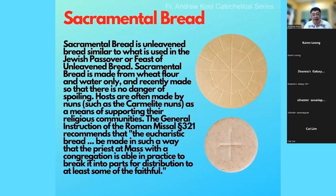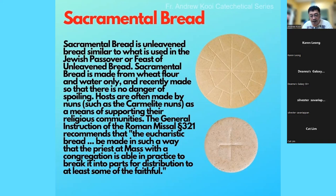Sacramental bread is special bread made for the Mass. It must be made in such a way that the priest will be able to break part of it to share with the faithful. It is made out of unleavened bread of wheat flour and water only — no other material. In most cases the nuns, especially the Carmelite nuns, may be making this kind of bread. Nowadays, because some communities are aging, sacramental bread is obtained from other specialized sources.